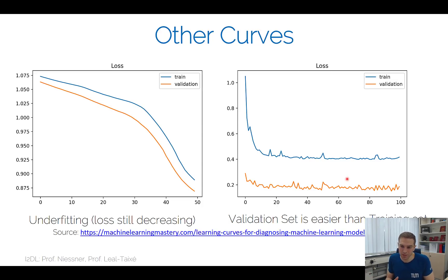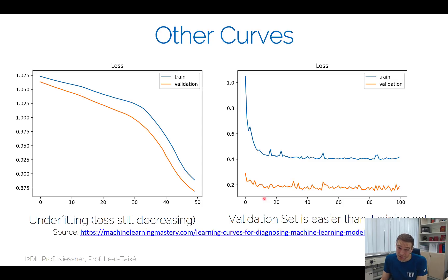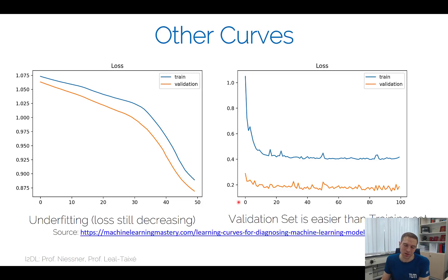Ideally, training and validation sets should come from an identical distribution. If not, you end up in this situation. When I advise students and they see this, they say 'oh it's going down' — but you should first figure out what's wrong. If you don't understand why it happens, it will bite you later. Either you have misdistributed data — check that training and validation data are correct — or you simply have a bug in your evaluation code.